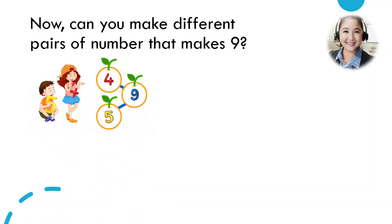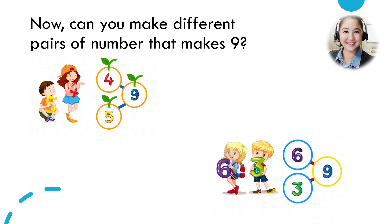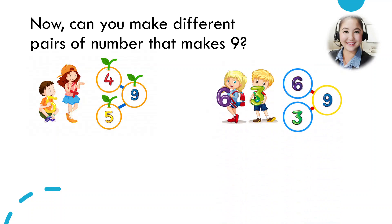Okay, there. We have four and five. That makes nine. Great job! Yes, six and three also makes nine. Correct. And two and seven also makes nine.